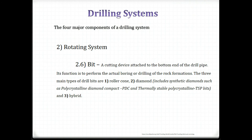The drill bit is a cutting device attached to the bottom end of the drill pipe. Its function is to perform the actual boring or drilling of the rock formations. The three main types of drill bits are roller comb bits, diamond bits, and hybrid bits.